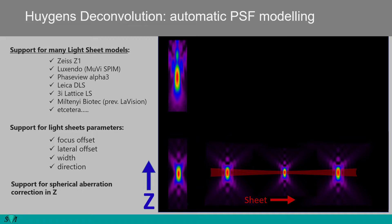Huygens also supports different configurations between illumination and detection, and it can correct for non-ideal alignment of the lightsheet with the focus of the detection objective lens.